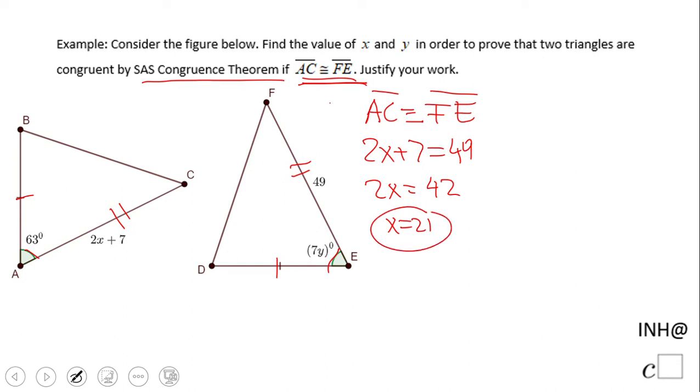Now for y, pretty much the same story. We're looking to see these two angles are congruent because they're congruent by SAS congruence theorem. So we have angle A congruent to angle E, so the measure of the two angles is the same, which means 7y equals 63.